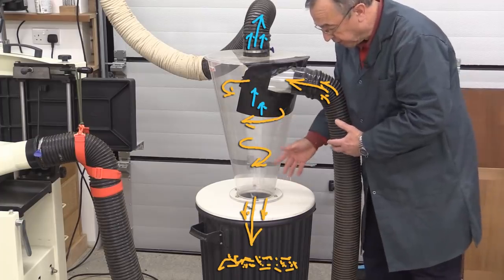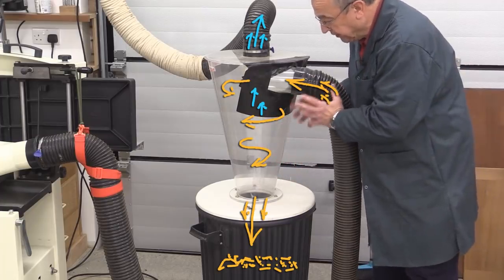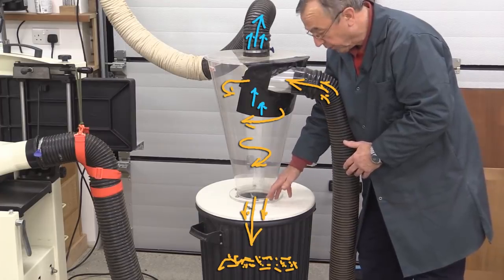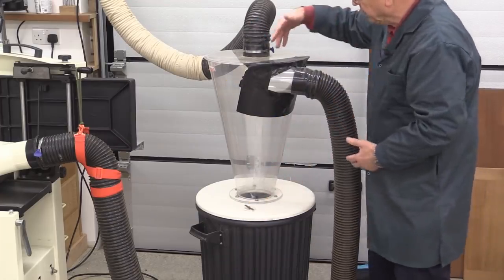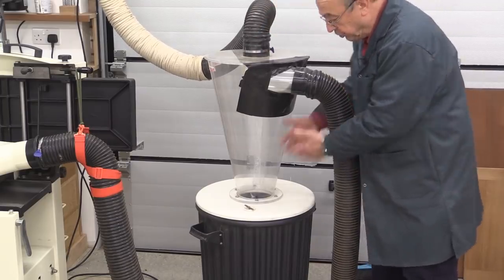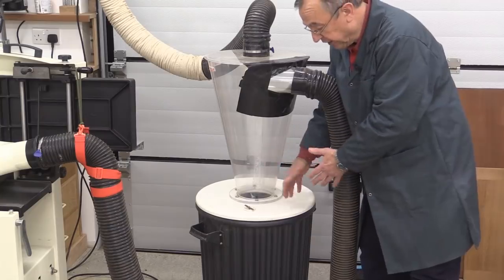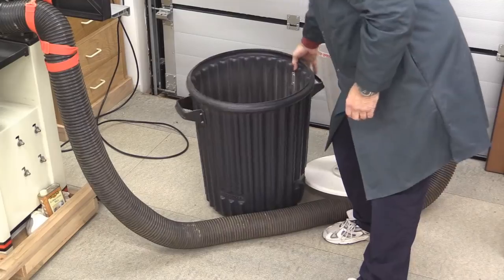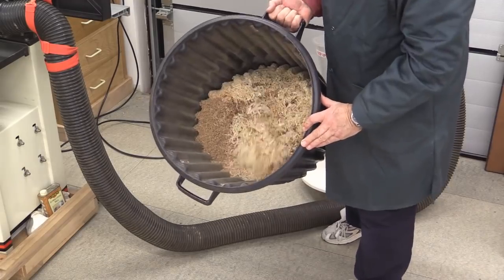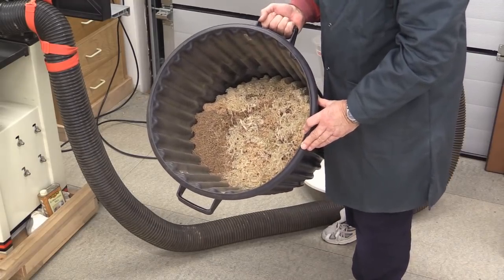The chippings, as they spiral down, get too heavy for any influence from the extractor, and they drop into the drop box below. That way, you end up with relatively clean air going into the extractor and the majority of the dust and chippings going into the bin below. Here you can see the various chippings that I've generated in the last hour or two here in the workshop.